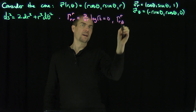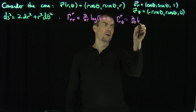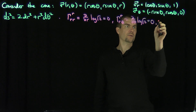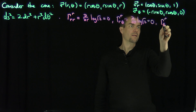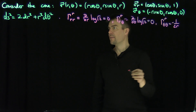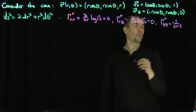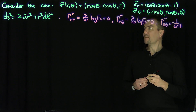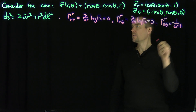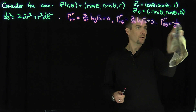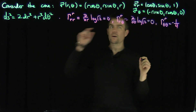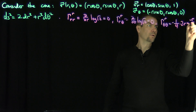Gamma^r_r_theta is the theta-derivative of log(√2), again zero. For gamma^r_theta_theta, that's going to be negative 1 over 2r, times the r-derivative of the theta-theta metric term, which is 2r. So it's going to be negative r over 2.